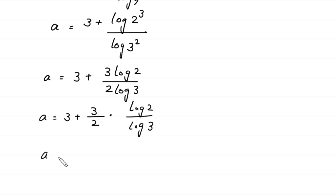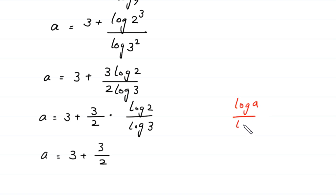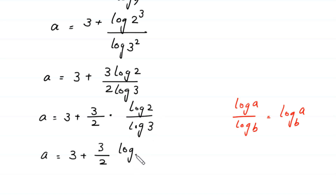Next, a is equal to 3 plus 3 divided by 2. By using the log property, log of A divided by log of B is equal to log of A to the base B, this log of 2 over log of 3 will become log to the base 3 of 2.